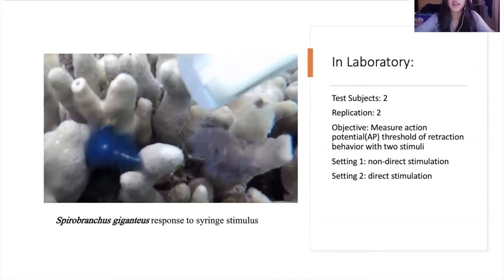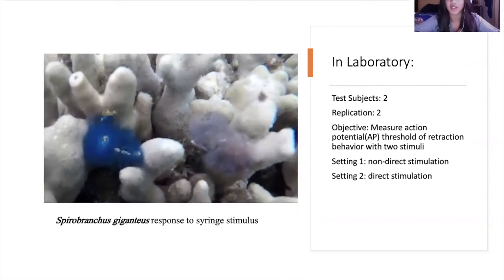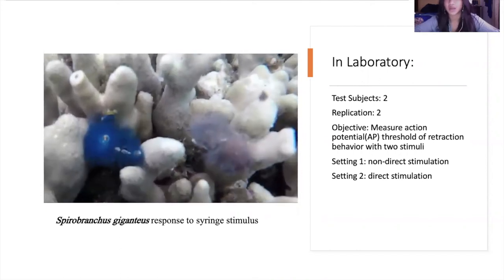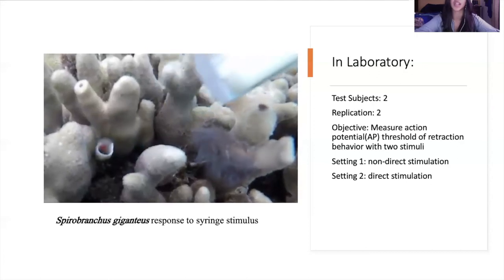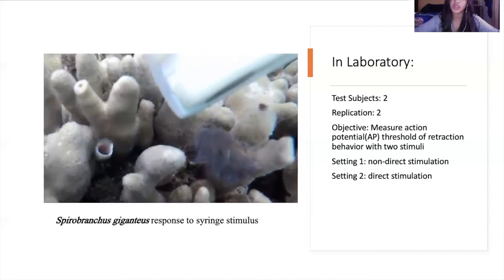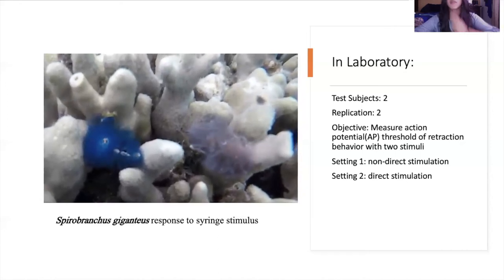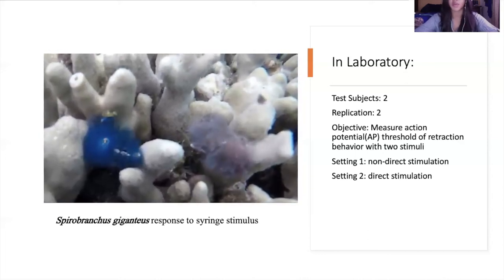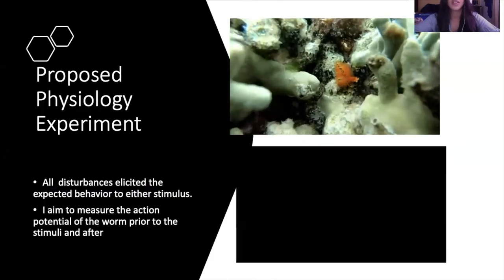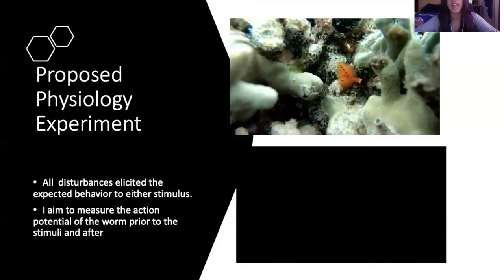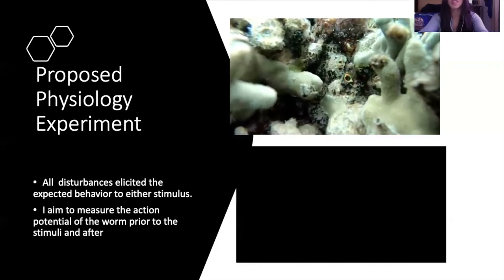In the lab, to experiment on these worms, I would have two test subjects and replicate it twice. The objective of this lab is to observe the physiology of the retraction behavior of the Christmas tree worm. We would measure the action potential threshold of retraction behavior with two different stimuli: the first being non-direct stimulation and the second being direct stimulation. All of the disturbances elicited the expected behavior, and I aim to measure the action potential of the worm prior to and after the stimuli.